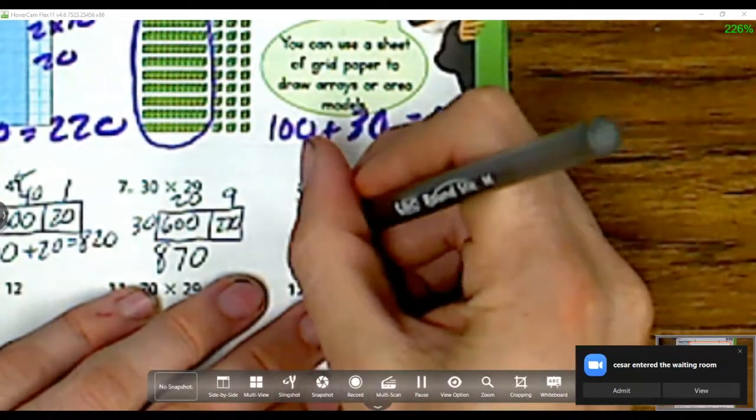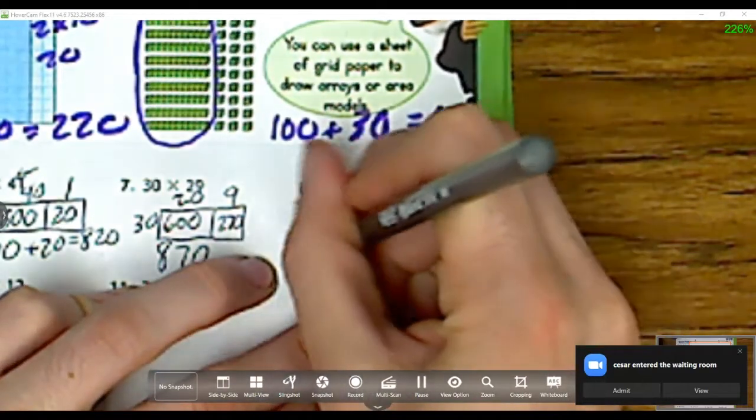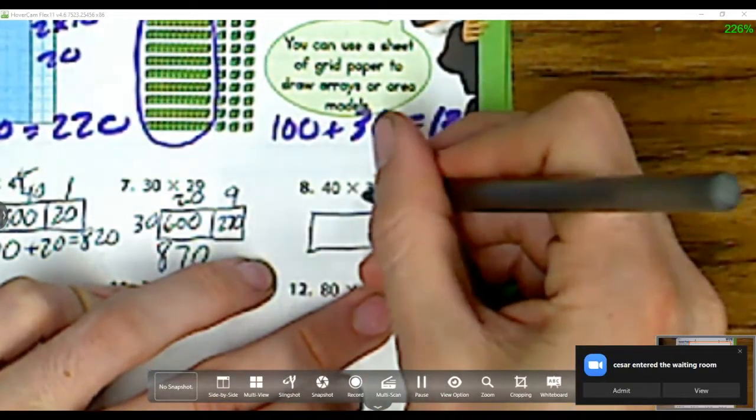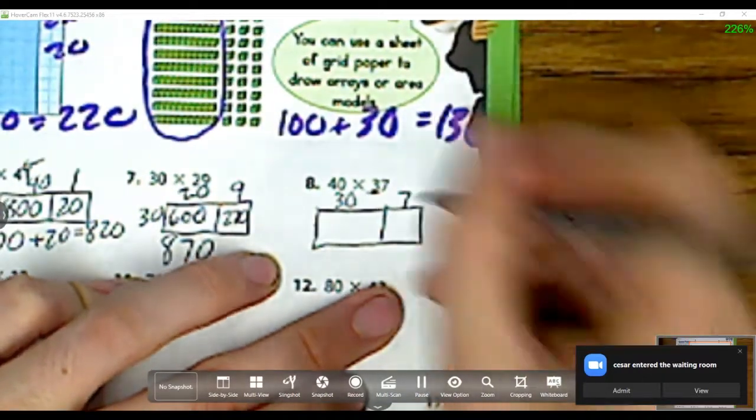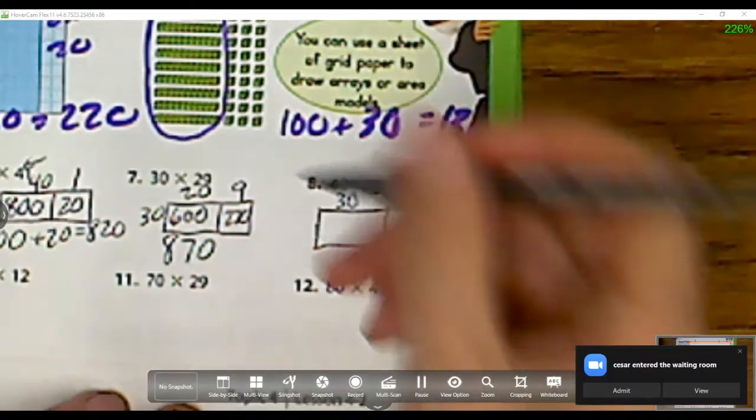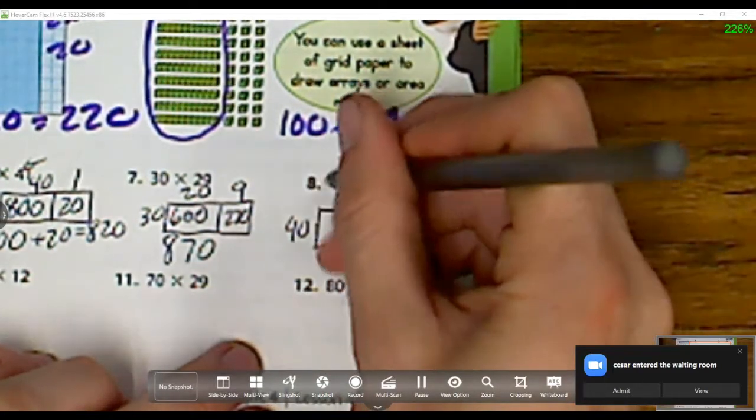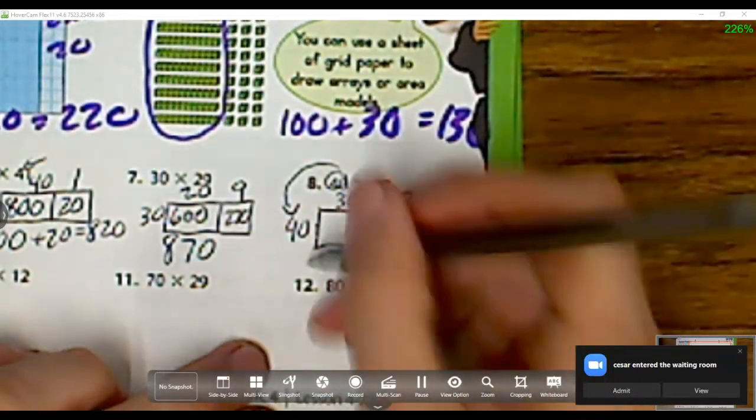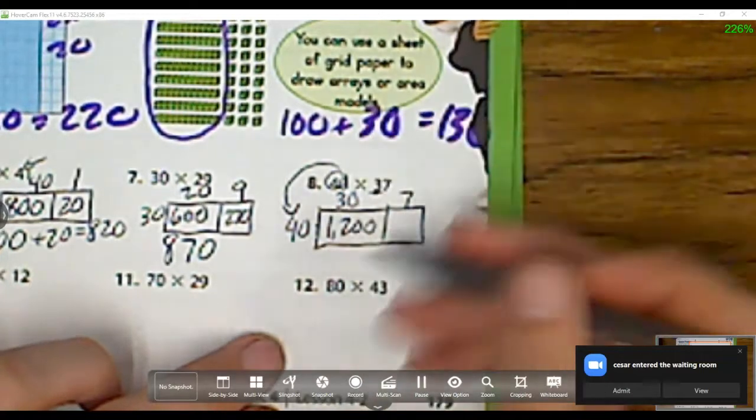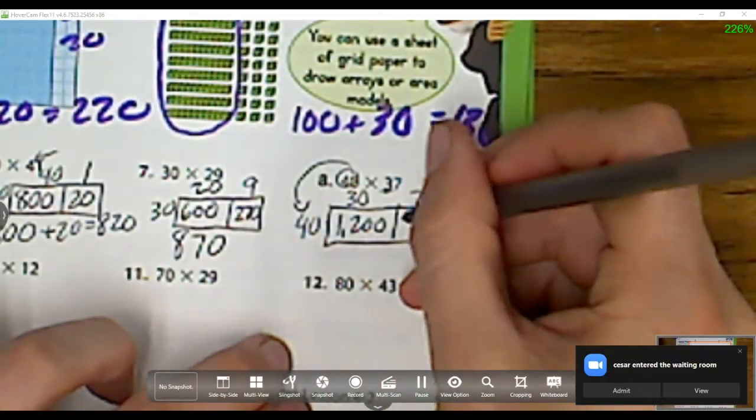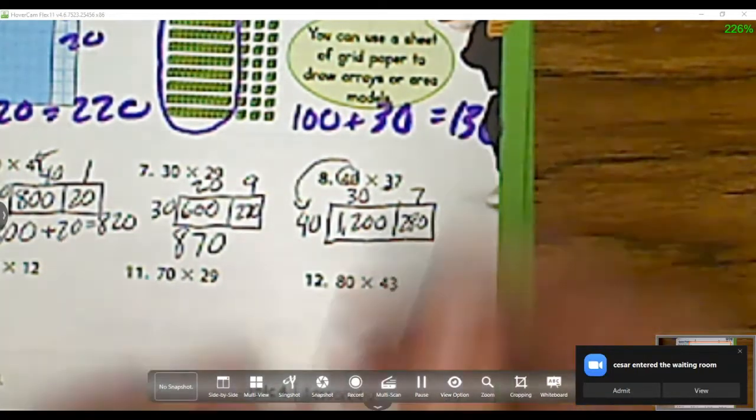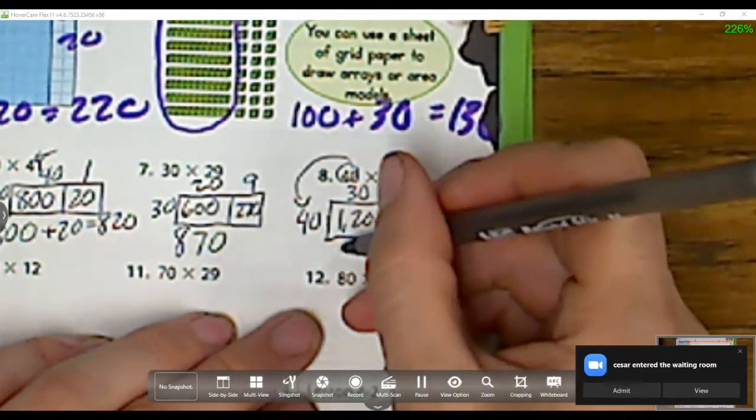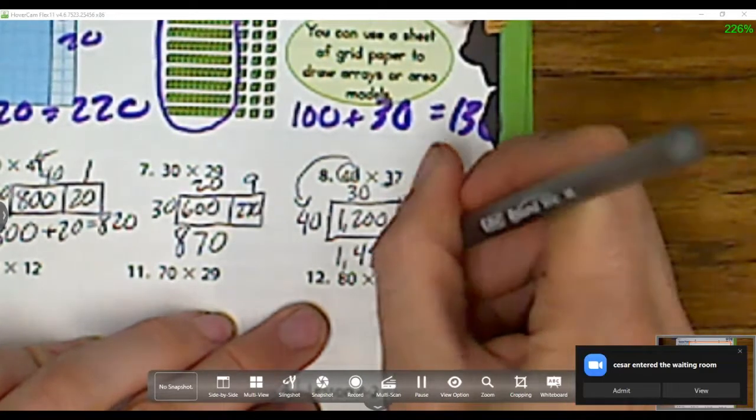Now let's go on to our next one, 40 times 37. Again, I'm breaking up into my tens place value and my ones place value, and I'm multiplying it by 40. So I have 40 times 30 is 1,200, and I have 40 times 7 is 280. So now let's add those up, and I get 1,480. So we got this down.